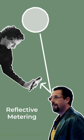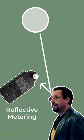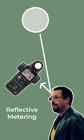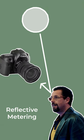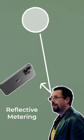Reflective metering faces the meter towards the subject and measures the amount of light that is hitting the subject and bouncing back to the meter. This can be done with a dome meter, with a spot meter, or with a camera or phone's light meter.